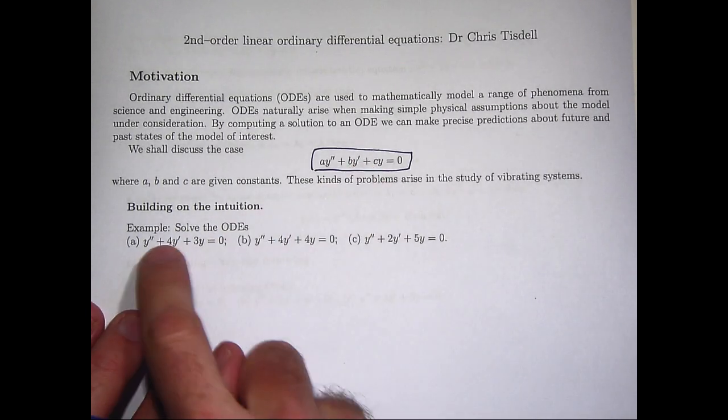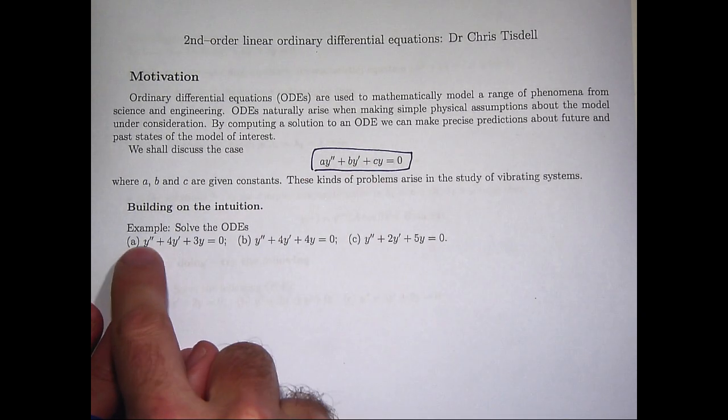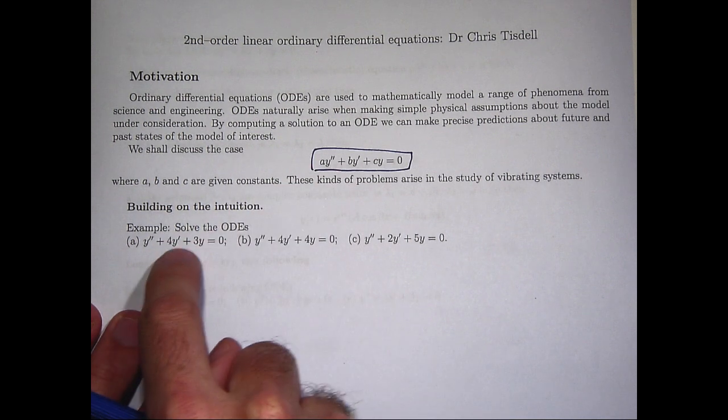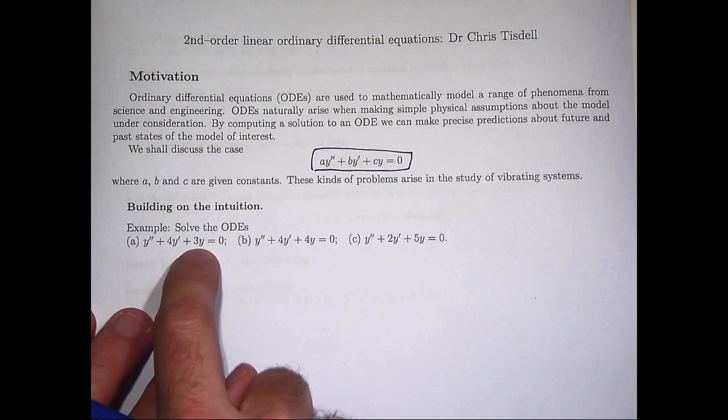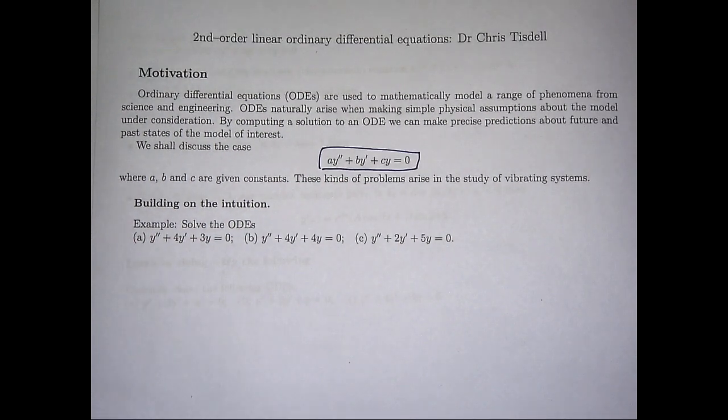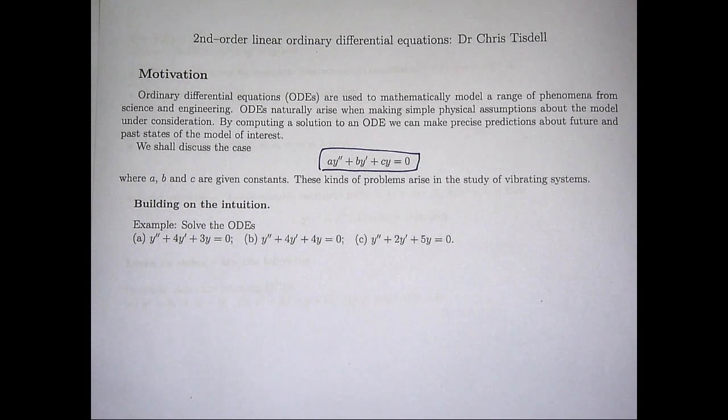So if you sort of compare this with this, you can see well in the first case, a is 1, b is positive 4 and c is 3. Now in your book I might just check that they're the same because I just wanted to make all the roots be negative for the spring mass discussion that I'm going to talk about at the end.